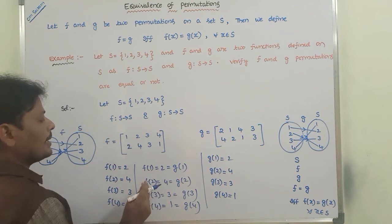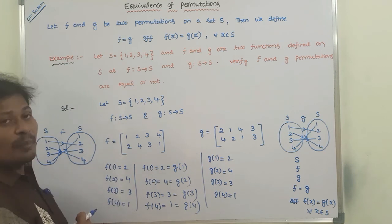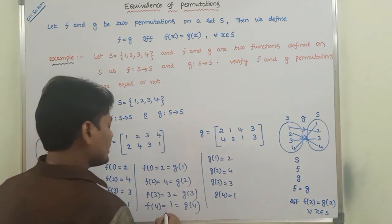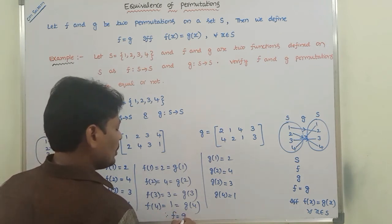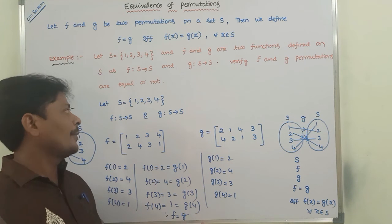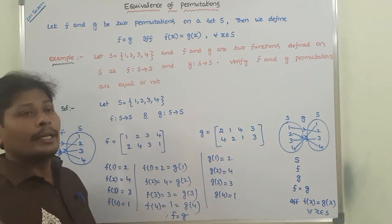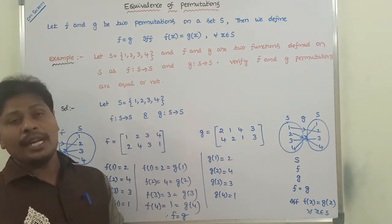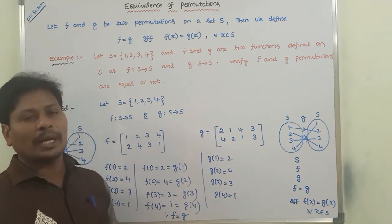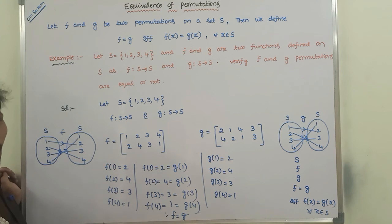So we can say that for each and every element we take in set S, the image in function F is equal to the image in function G. Hence we conclude that permutation F is equal to permutation G, because for any element x in S, the image in permutation F and permutation G are equal. In this way, we solve the given problem.